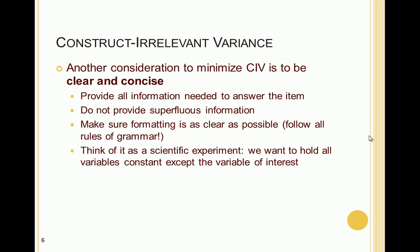Another consideration to minimize construct irrelevant variance is to be clear and concise. When writing an item, make sure to provide all the information needed to answer it, but do not provide any superfluous information. Make sure formatting is as clear as possible, and an important part of this is to follow all the rules of normal English grammar, regardless of what language you're using.